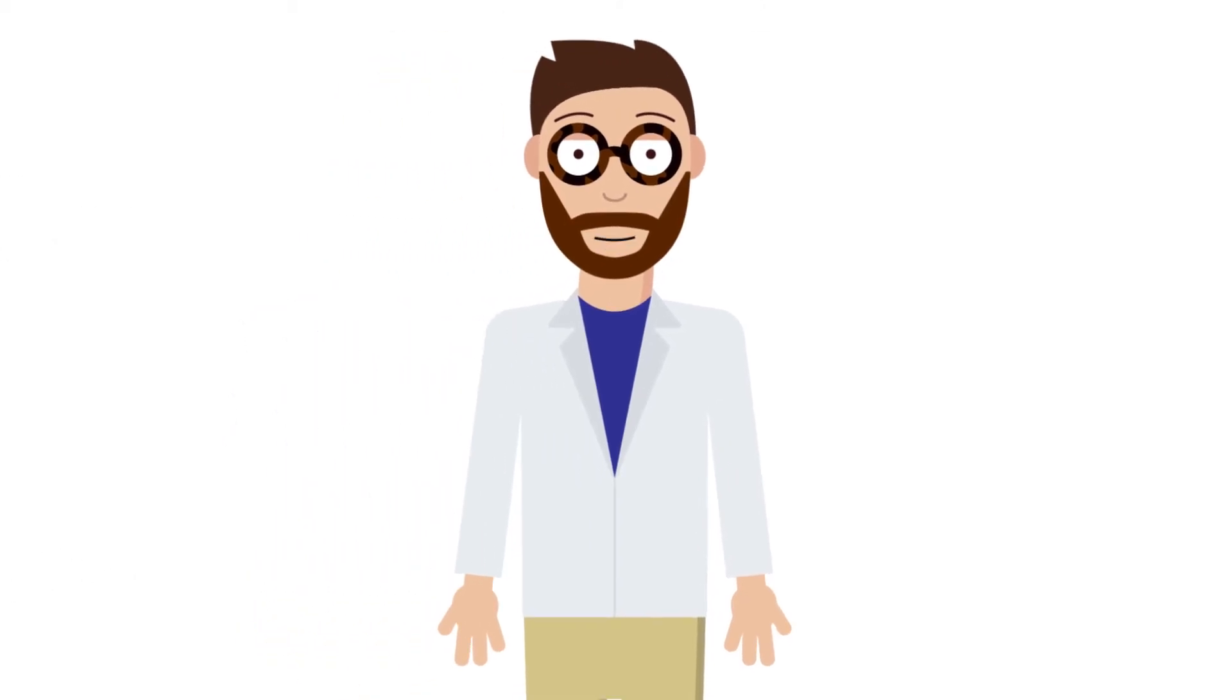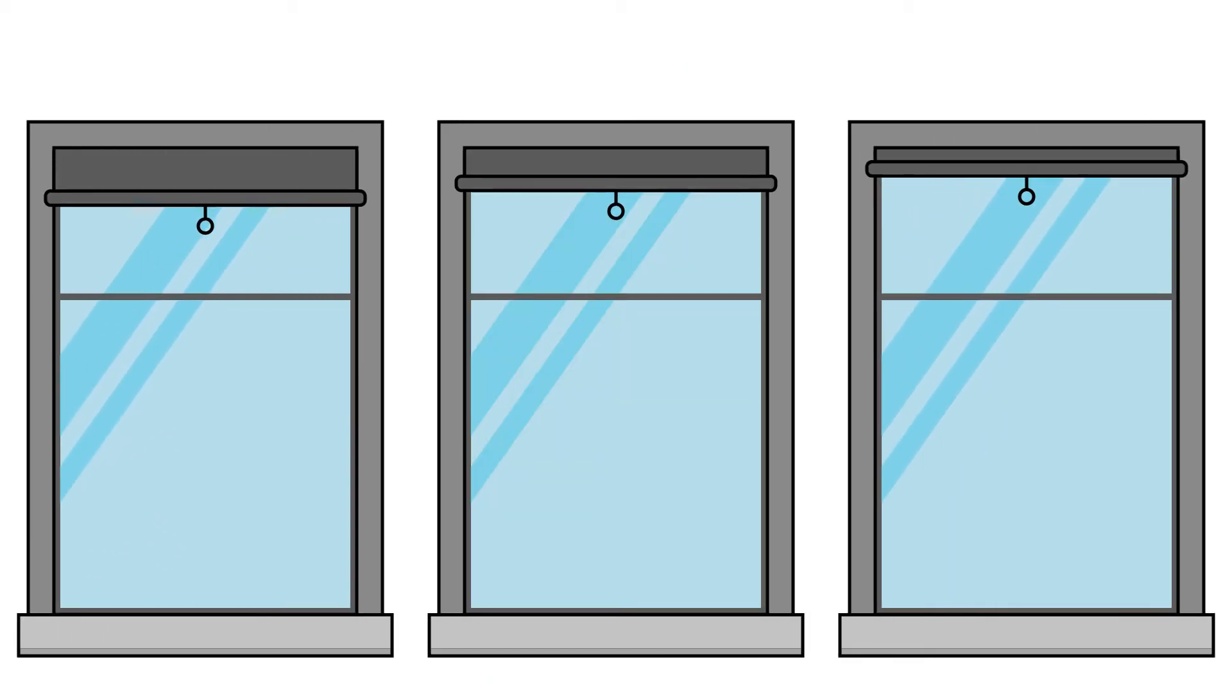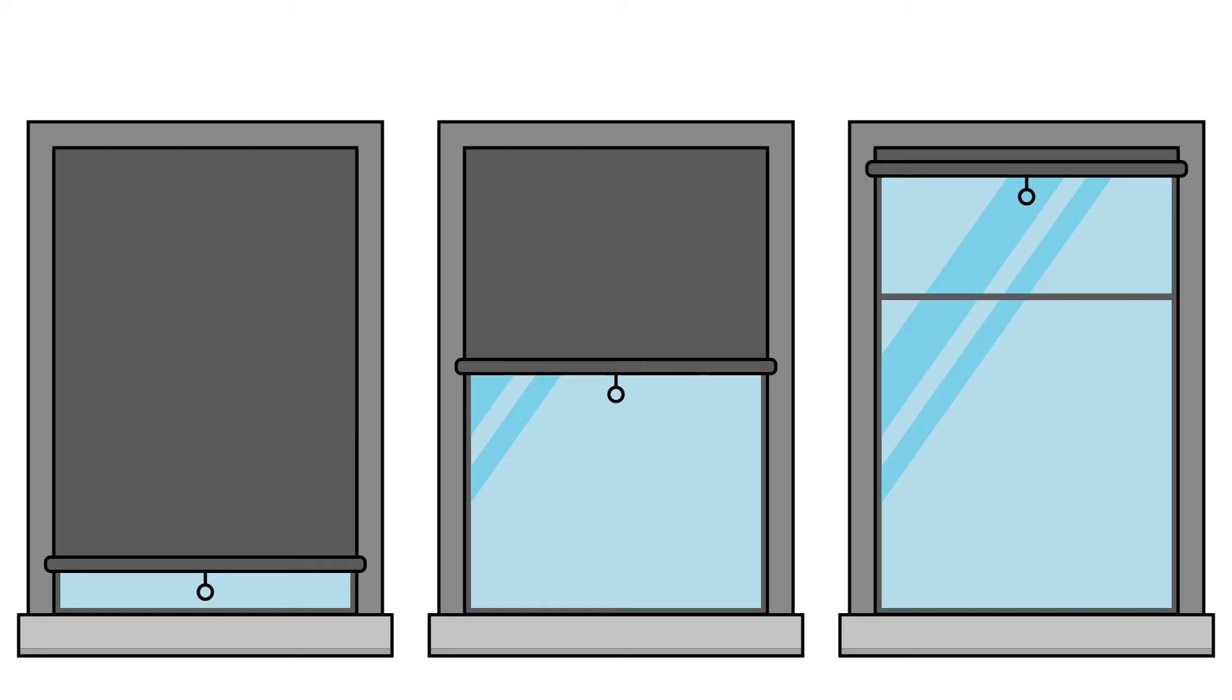You can organize your experiment any way you want, as long as the different test cases receive different amounts of the independent variable, and you do your best to keep the other variables the same. In our example, I'll use three identical windows and use blinds to control the amount of sunlight. One plant will receive no sunlight, one will receive half sunlight, and one will receive full sunlight.